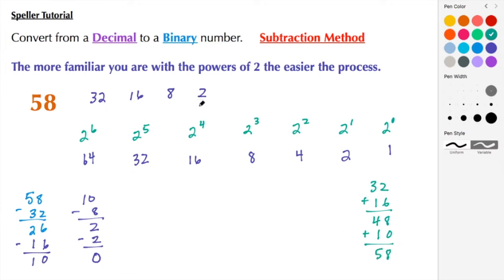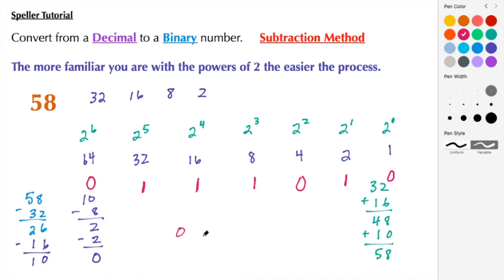Now we select each power we used: we used 32, so that bit is turned on; we used 16, that bit is on; we used 8, that bit is on; and we used 2, that bit is on. Everywhere else we place a zero — we didn't use 2 to the 0, 2 to the second, or 2 to the sixth. So 58 in binary is 0111010. That sums up this tutorial — if you found this content useful, please subscribe, share, and like. Thank you for watching.